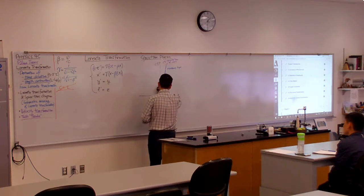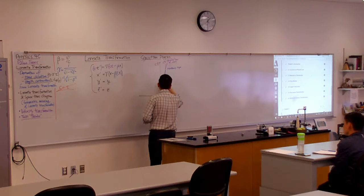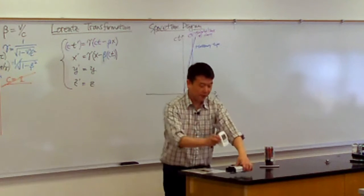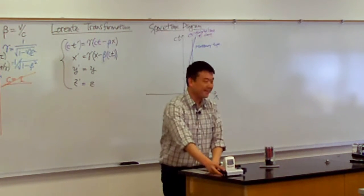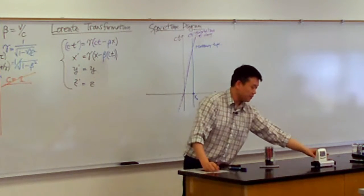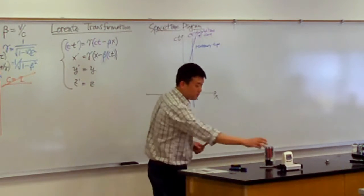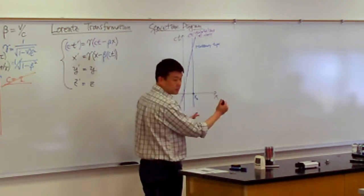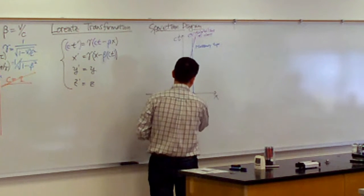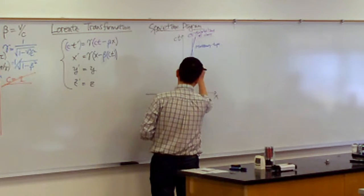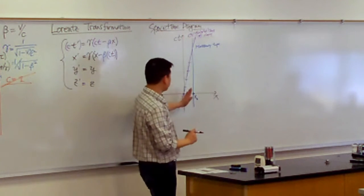I guess this is enough of the pieces to derive time dilation. So with time dilation, this is what you're imagining: I have a cart, now I have a clock on it, and it's going to be moving. So along this CT prime axis, X prime is equal to zero, but you can count off how many seconds there are. Counting from here — one second, two seconds, three seconds, four seconds, and so on. It's counting off seconds that way.